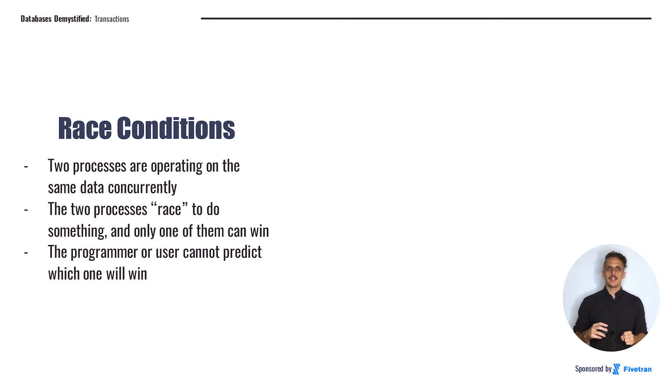Additionally, anytime you're doing processes in parallel, if they're operating on the same underlying data, you face the danger of what computer scientists call race conditions. Race conditions happen when two processes are trying to change the same data, and the result will change depending on which one gets there first. The two processes are racing to do something, and only one of them can win.